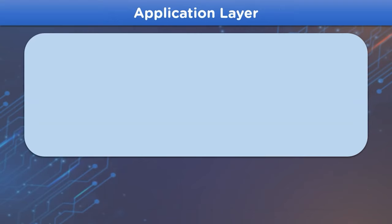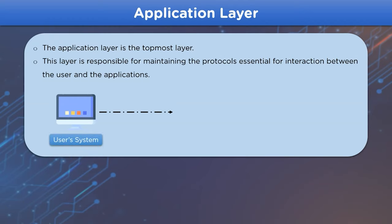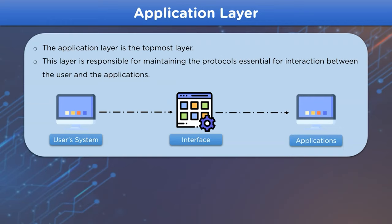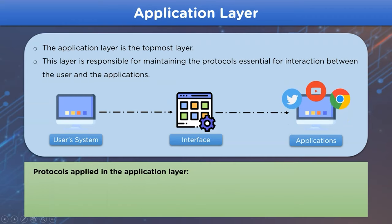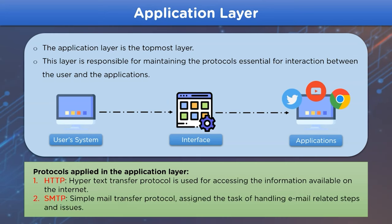The first layer is the application layer. This layer acts as an interface between applications and programs that require the TCP/IP model for communication, performing tasks such as data representation for software applications executed by the user, which are then forwarded to the transport layer. Protocols supplied by this layer include HTTP (Hypertext Transfer Protocol), used to access information on the internet, and SMTP (Simple Mail Transfer Protocol), used for email-related tasks.